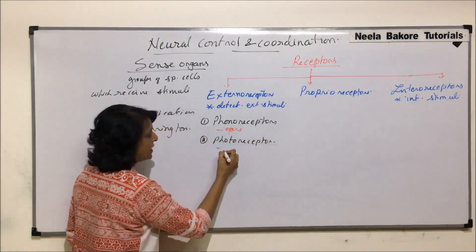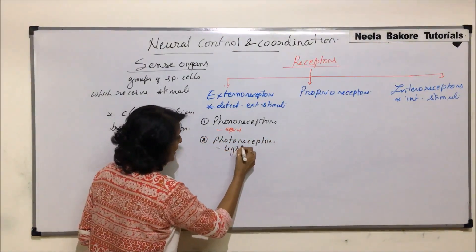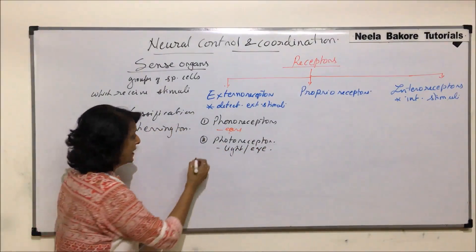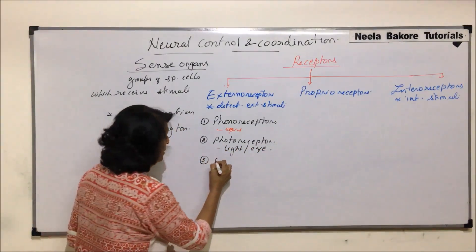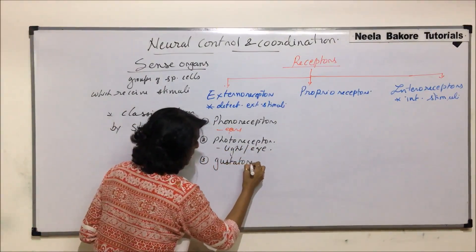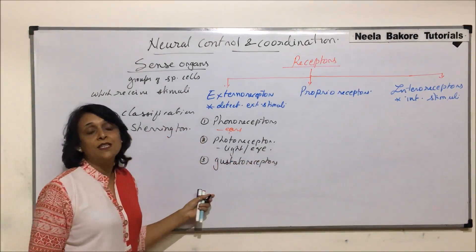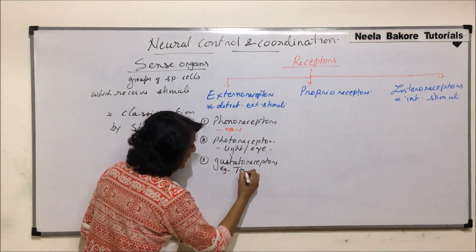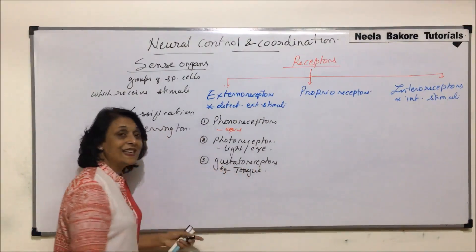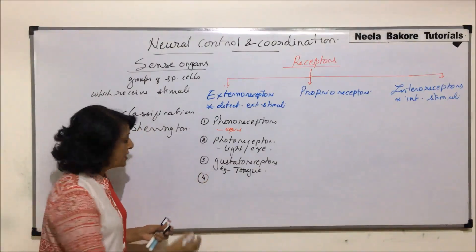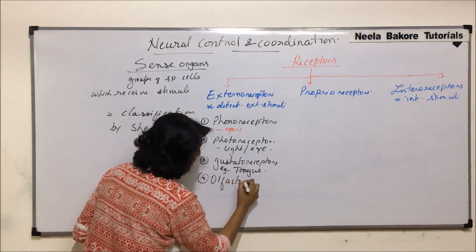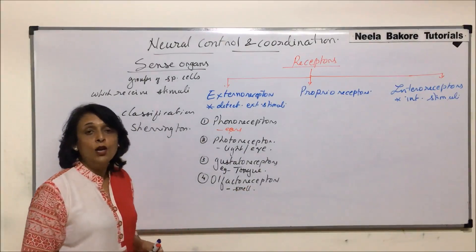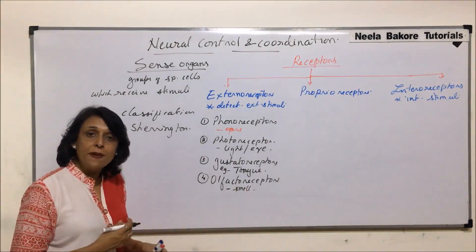Then we have photoreceptors, which help us perceive vision or light, so we would be talking about the structure and working of the eye. Third are gustatoreceptors, which help us in detection of chemicals by taste buds, so here we would be talking about the tongue. These are taste receptors. Then olfactoreceptors, which relate to our nose or the olfactory membrane which is in the nose.